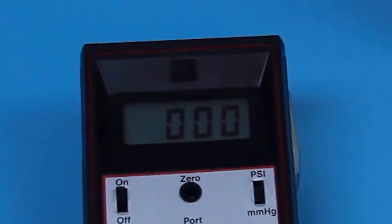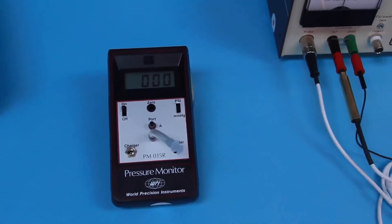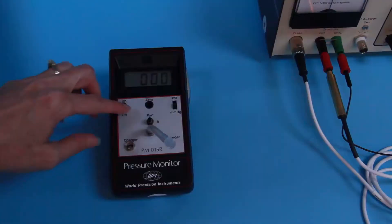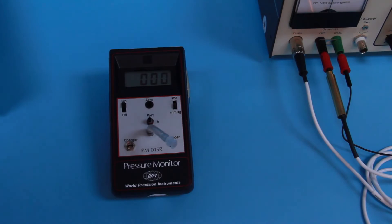Pressure can be read on the built-in LCD display or relayed to a chart recorder, oscilloscope, or computer. A range switch allows measurement in units of psi or millimeters of mercury.